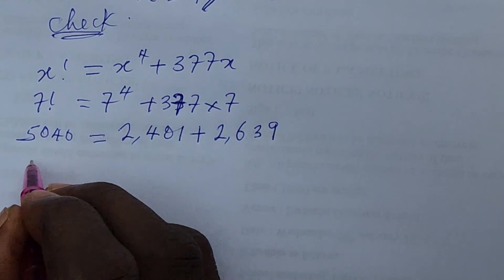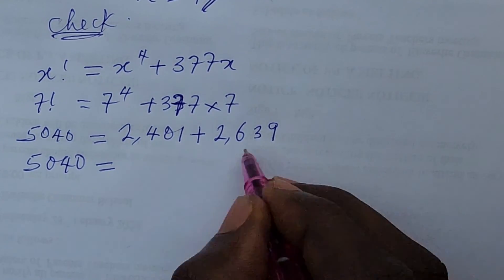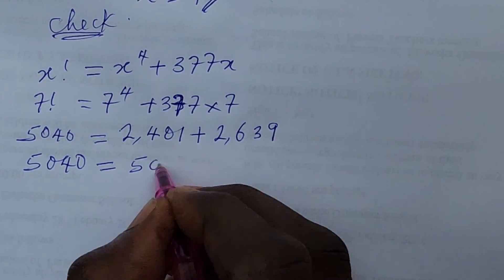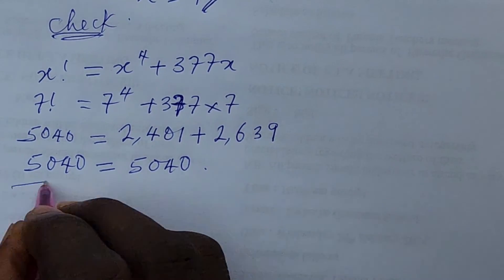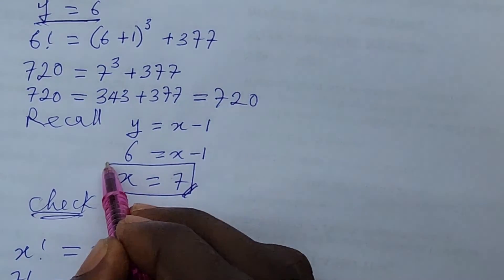So we simplify that we're going to have 5040 is equal to if we add up this this will give us 5040. Okay so that shows that our answer x equal to 7 is very correct.